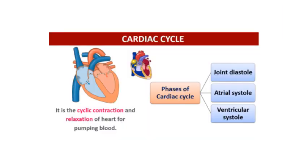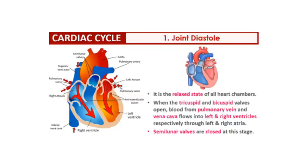Cardiac cycle is basically the cyclic contraction and relaxation of the heart for pumping the blood around the body. It has three phases. Diastole is when the heart is relaxed, and systole is when the heart is contracting. The three phases are joint diastole, atrial systole, and ventricular systole.